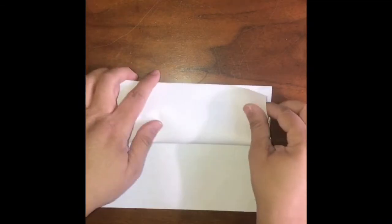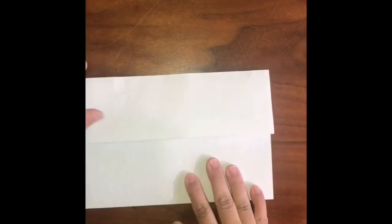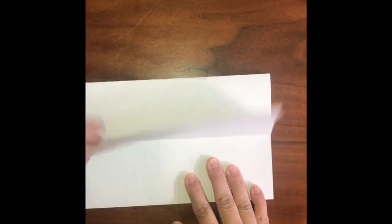Next, you're going to take the top flap and fold it up towards the original fold. Be very careful with the folding so that your creature turns out just right. Your paper will look like this.